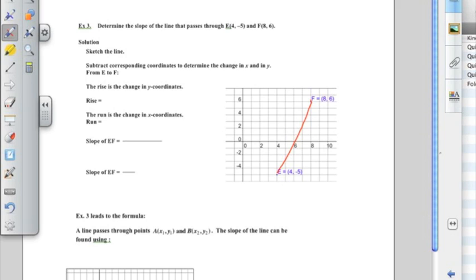The next instruction says subtract the corresponding coordinates to determine the change in x and the change in y. So when I'm working with coordinates, I like to start with my coordinate, my point that's on the right. So in that case it would be F, and just write down its coordinates, 8 and 6. And then underneath it, I like to put the other point, E, and write down its coordinates, 4 and negative 5.